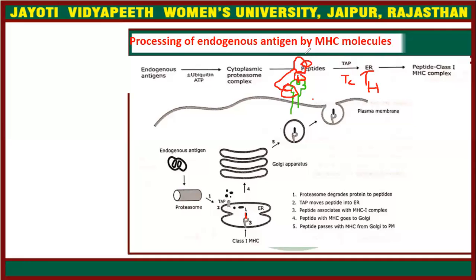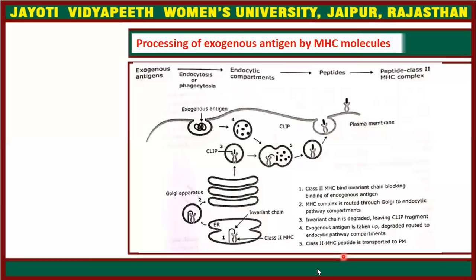This is the processing of endogenous antigen. Now we are going to discuss the processing of exogenous antigen. Exogenous antigens are antigens which are outside the cell — they are extracellular material. For processing of these exogenous antigens, certain cells known as phagocytic cells or antigen-presenting cells will phagocytose this antigen.